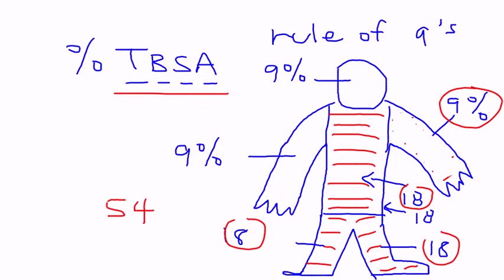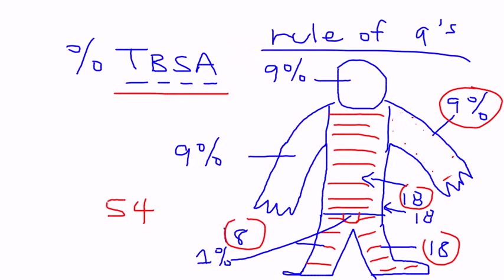There's one final part — the genital area — which is given 1%. When you total all of this up, it comes to 100%. That's the Rule of Nines.